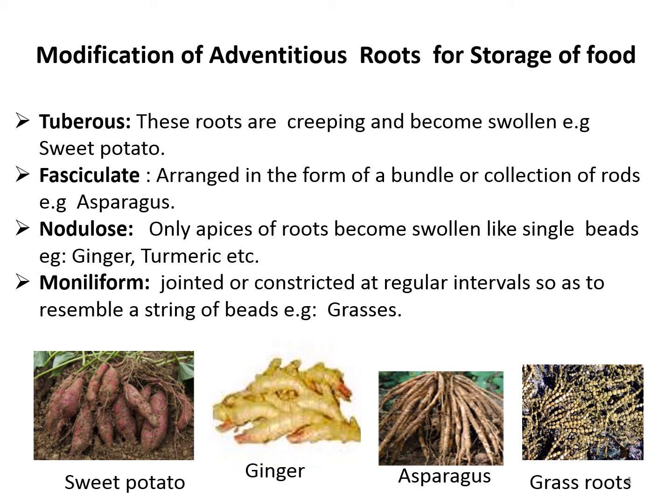Fasciculate roots are a cluster of adventitious roots for storage of food, arranged in the form of bundles or a collection of rods. An example is asparagus. Next is nodulose, in which only the apex of roots becomes swollen like single beads.